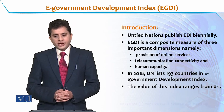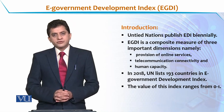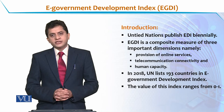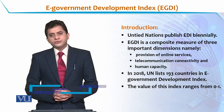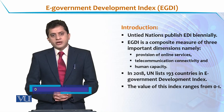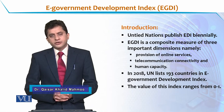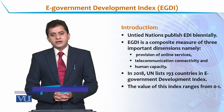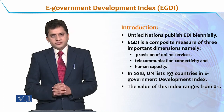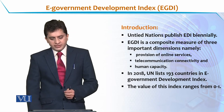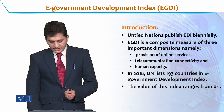In 2018, the United Nations listed 193 countries in the E-Government Development Index. The value of this index ranges from 0 to 1. If it is near to 0, it means the value is quite poor, and if the value is near to 1, it means that the country is achieving almost all the dimensions of the E-Government Index.